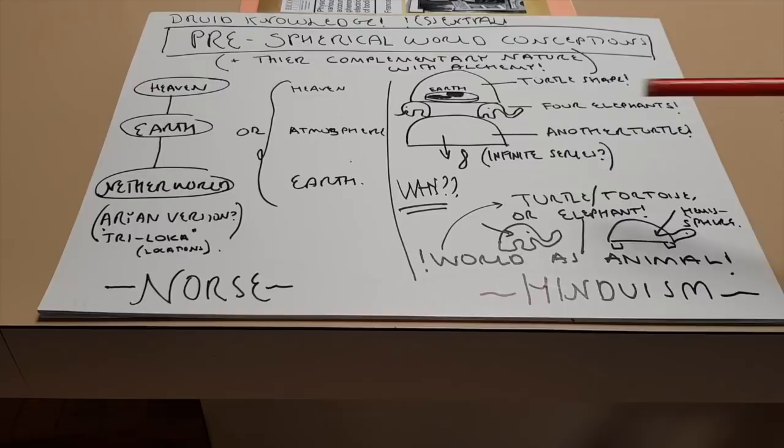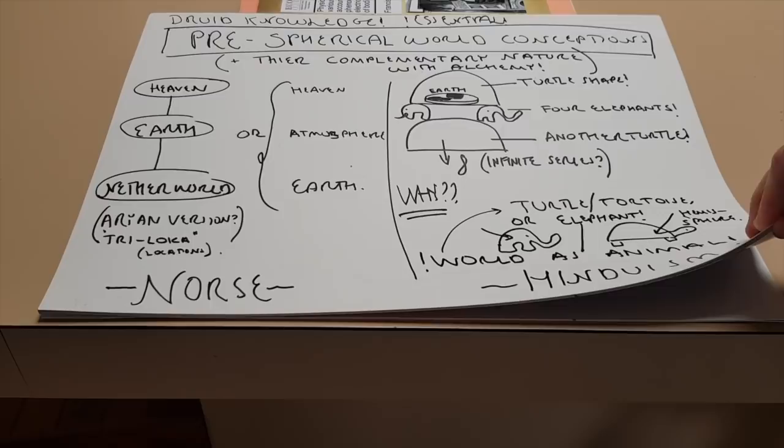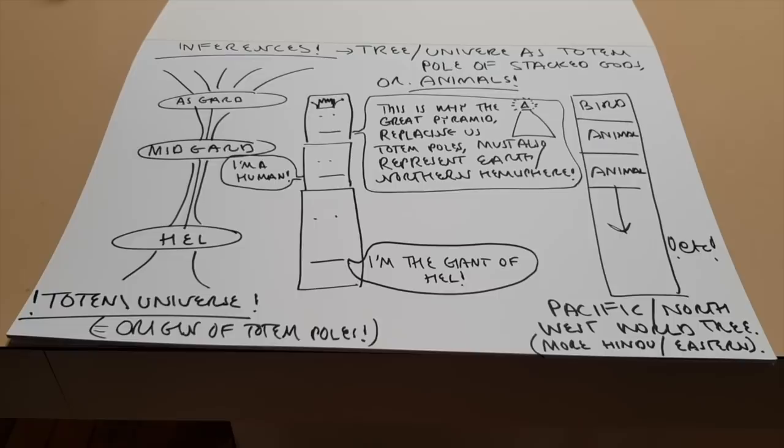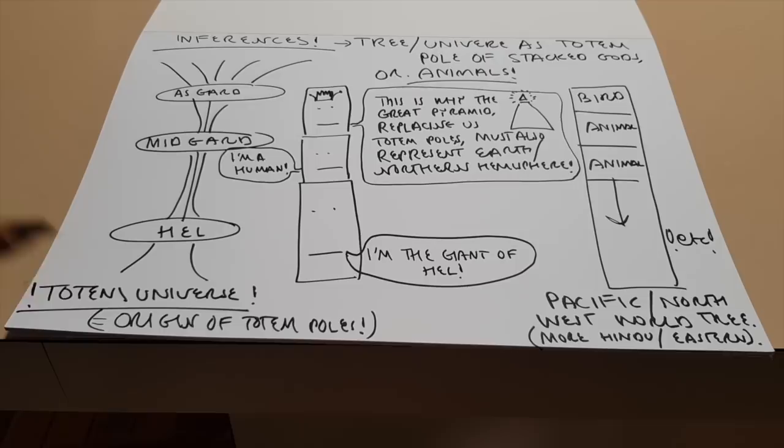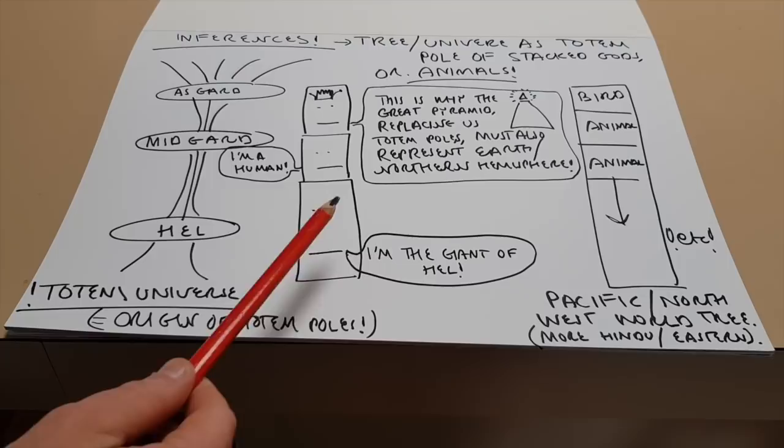And of course, if that is the case, then you have a pole, do you not? So basically what we're seeing is the origin of the totem pole itself. The totem pole is the universe and is the tree. And we've shown in earlier videos that on the totem pole, that the big giant is often placed on the bottom.